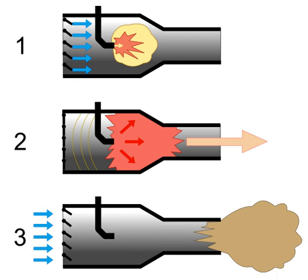The pulsejet uses the Lenoir cycle, which, lacking an external compressive driver such as the Otto cycle's piston or the Brayton cycle's compression turbine, drives compression with acoustic resonance in a tube. This limits the maximum pre-combustion pressure ratio to around 1.2 to 1. The high noise levels usually make them impractical for other than military and other similarly restricted applications.